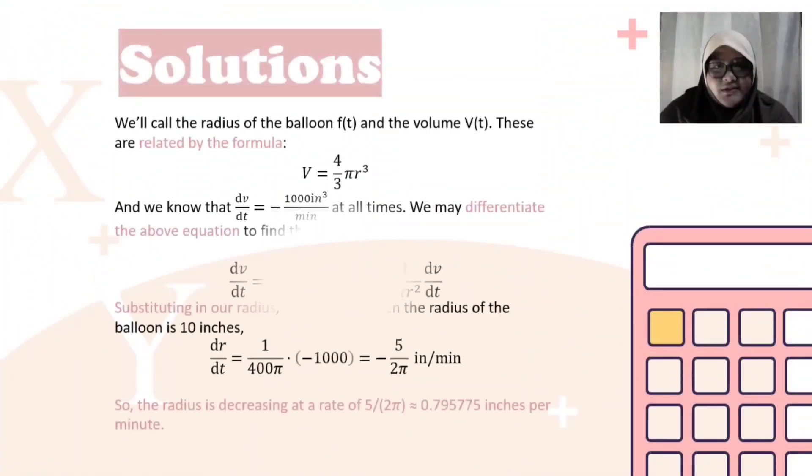Next, the solutions. We'll call the radius of the balloon r(t) and the volume V(t). These are related by the formula V = 4/3 πr³. And we know that dv/dt is equal to negative 1000 inch cubes per minute at all times.